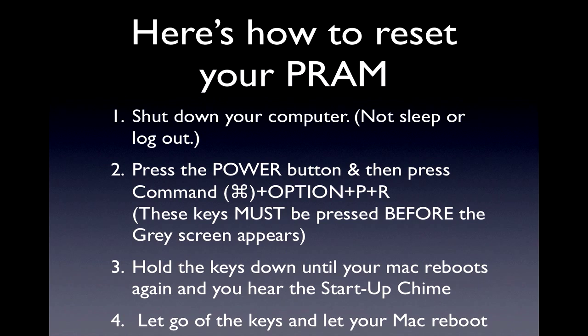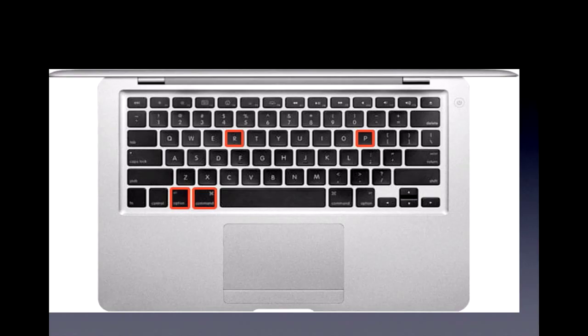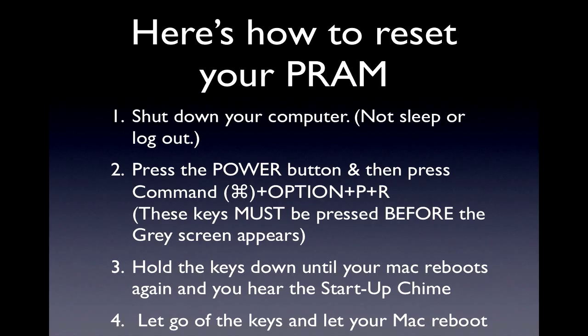The first thing you do is shut down your computer — don't just put it to sleep or log out. Next, press the power button, and then press Command, Option, P, and R. Hold all those keys down together, and you must press those keys before the gray startup screen appears. Hold those keys down until your Mac reboots again and you hear the startup chime, then let go of the keys and let your Mac reboot. You've just reset your PRAM.